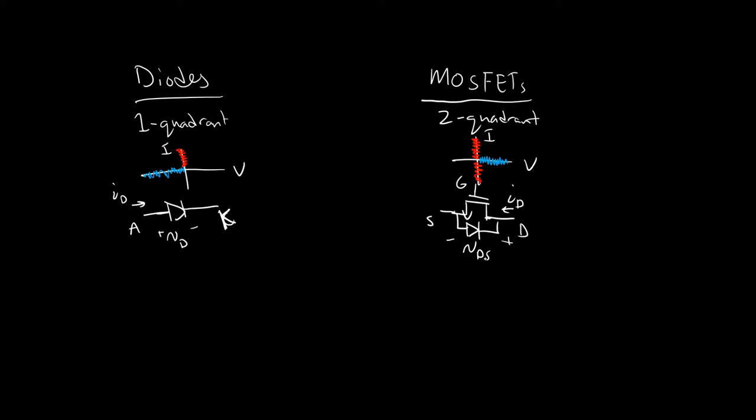Using one and two-quadrant devices, we can do whatever we want. We're actually able to create four-quadrant devices using just MOSFETs, or create current-unidirectional devices with MOSFETs. Using these things we can group them together to create different kinds of devices. For example, we can make a four-quadrant device out of two MOSFETs back to back.